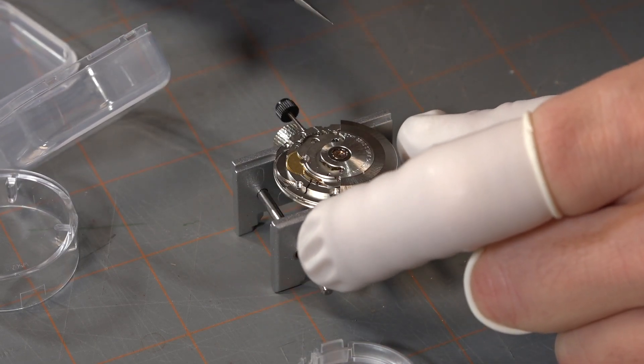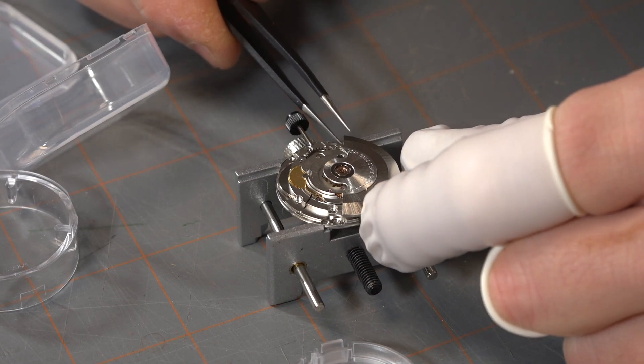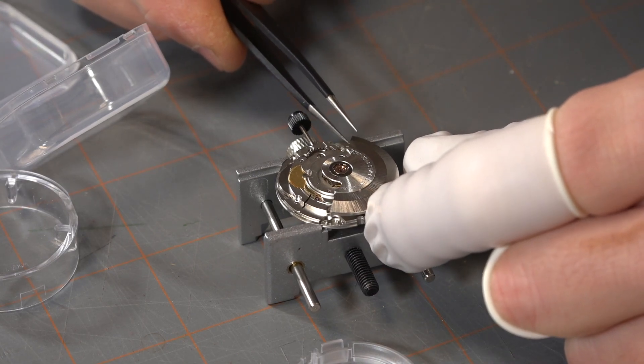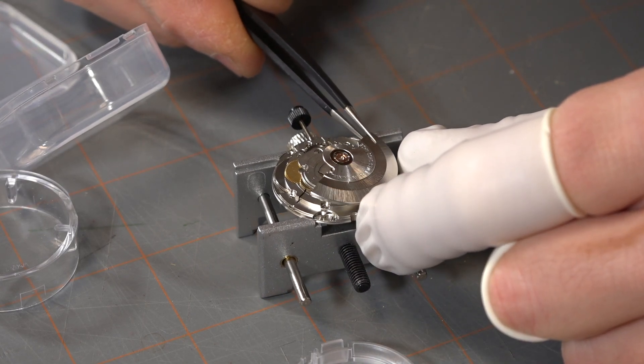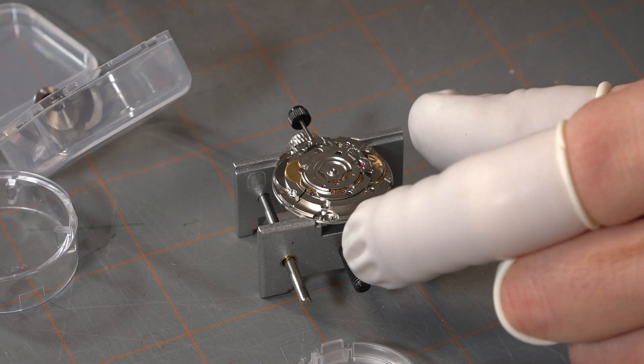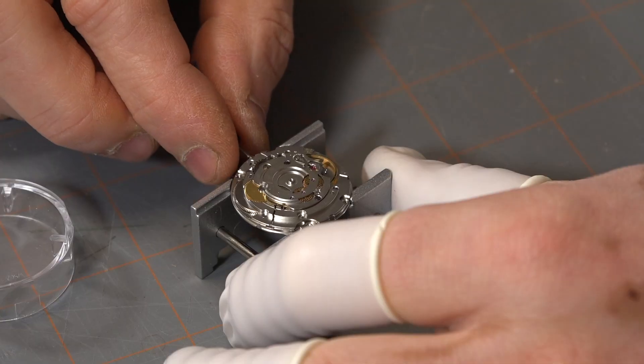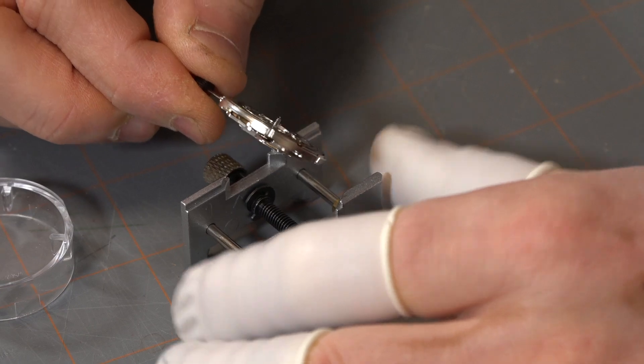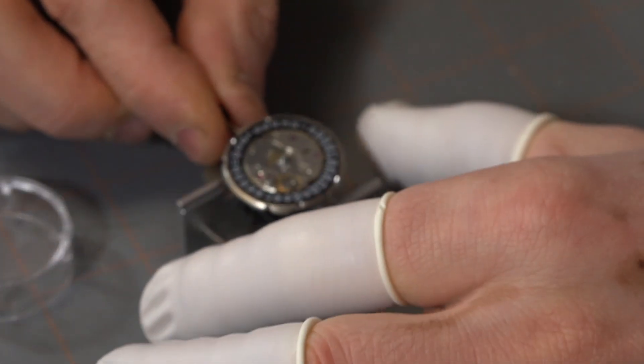As your wrist moves around, this little piece of metal spins around and it transfers that energy into a little clutch system, and that then transfers the energy into the mainspring. A lot of movements actually have both manual winding as well as automatic winding capabilities.